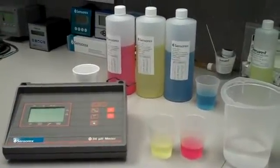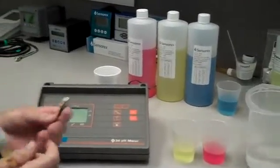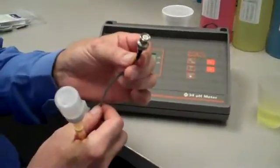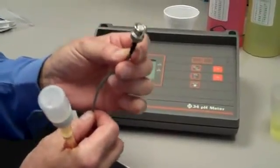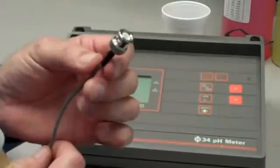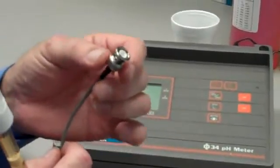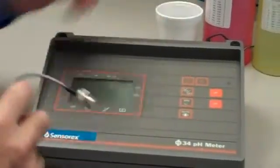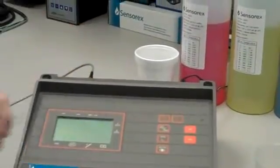When calibrating a new pH electrode for the first time, you'll need to examine the cable and the connector that comes with the sensor. In this case, I'm using the popular BNC coaxial connector. It's a press-on and twist-to-lock, so I will connect it to the receptacle in the back of the meter.